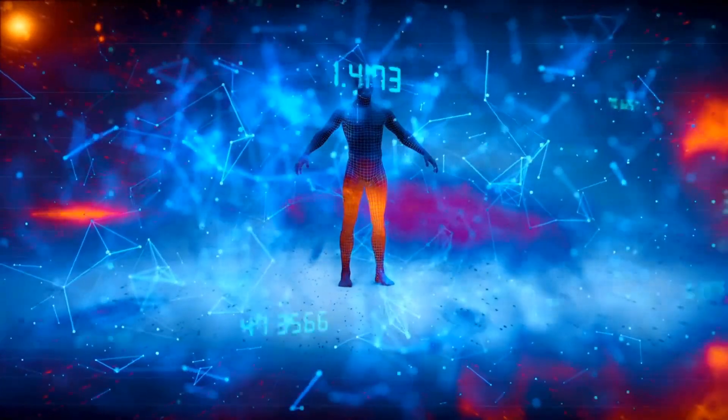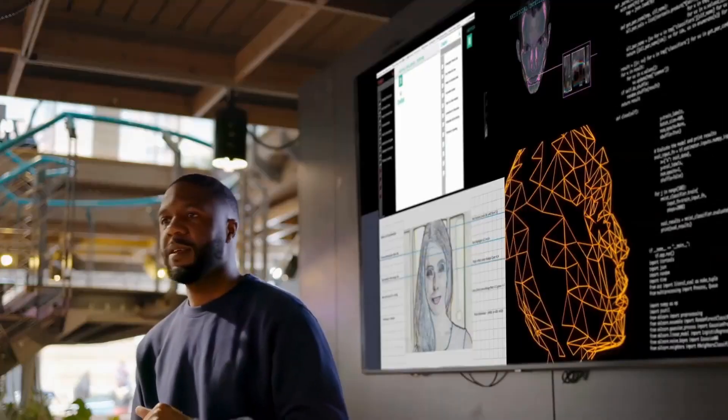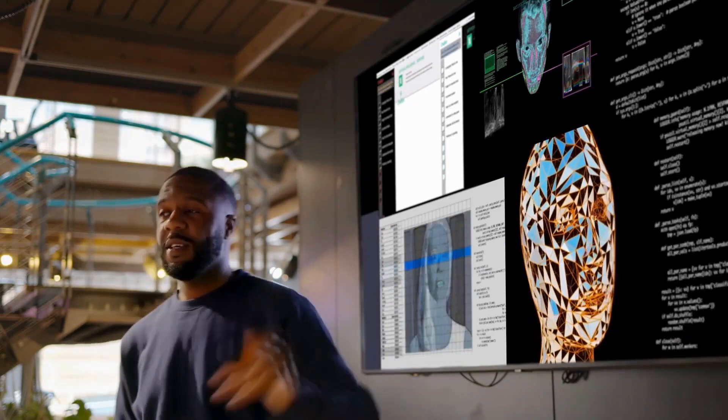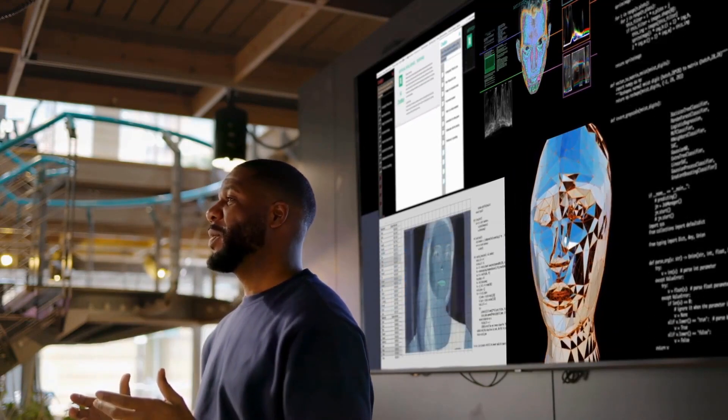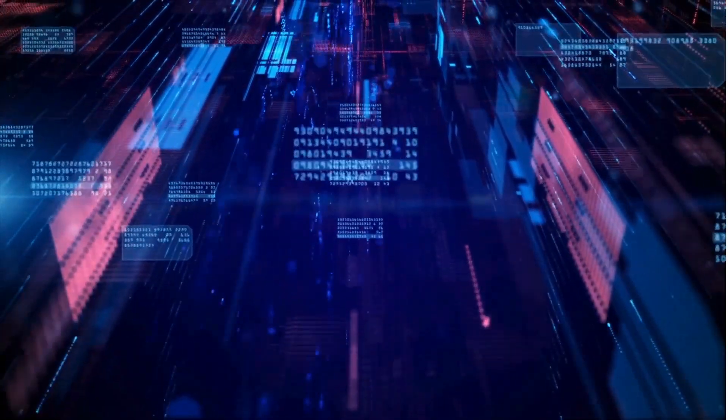Humans excel in social intelligence. We form meaningful connections, understand context, and navigate complex emotions in ways AI simply cannot replicate. The human ability to sense underlying emotions, understand sarcasm, and offer comfort in difficult times makes us unique.